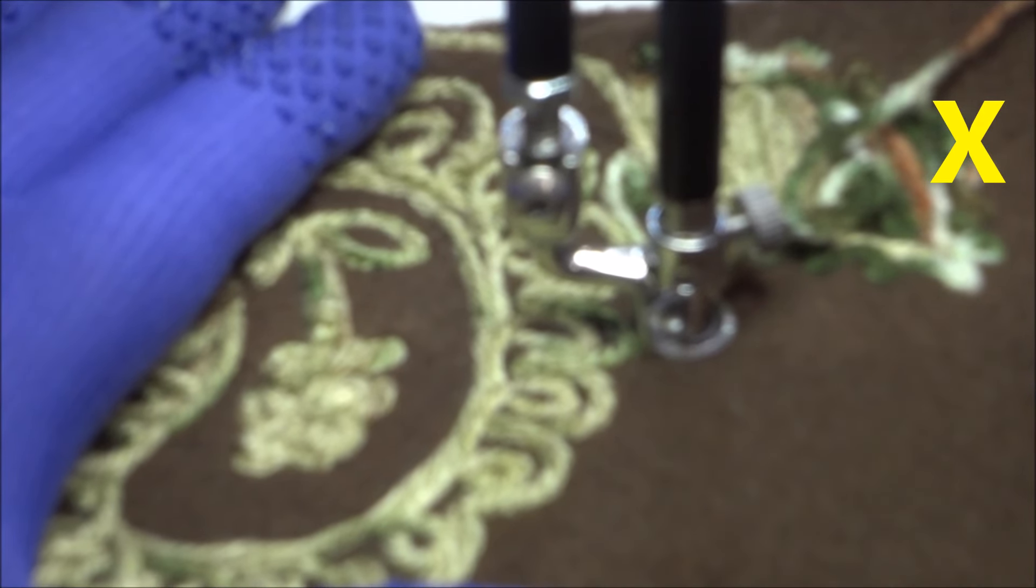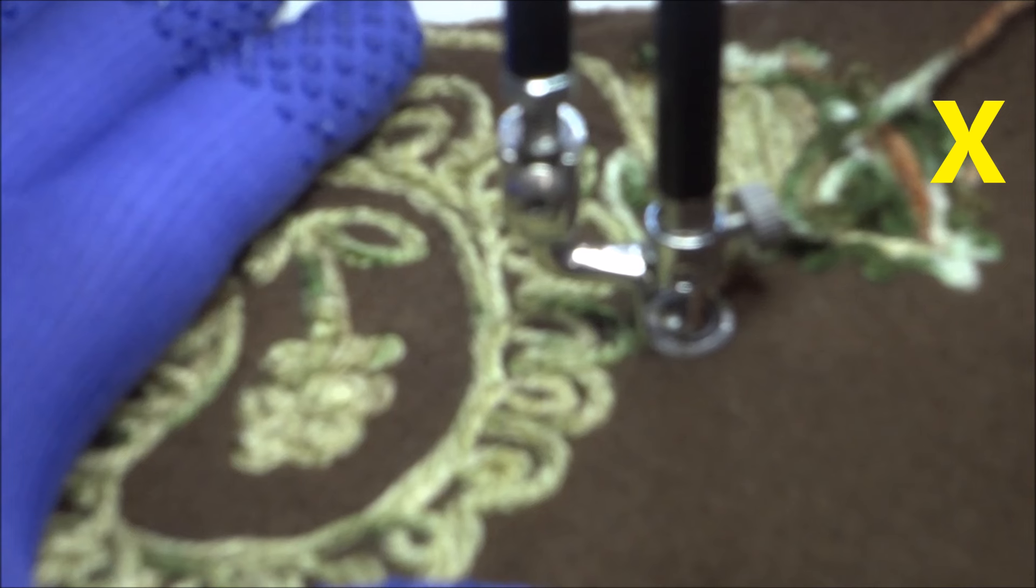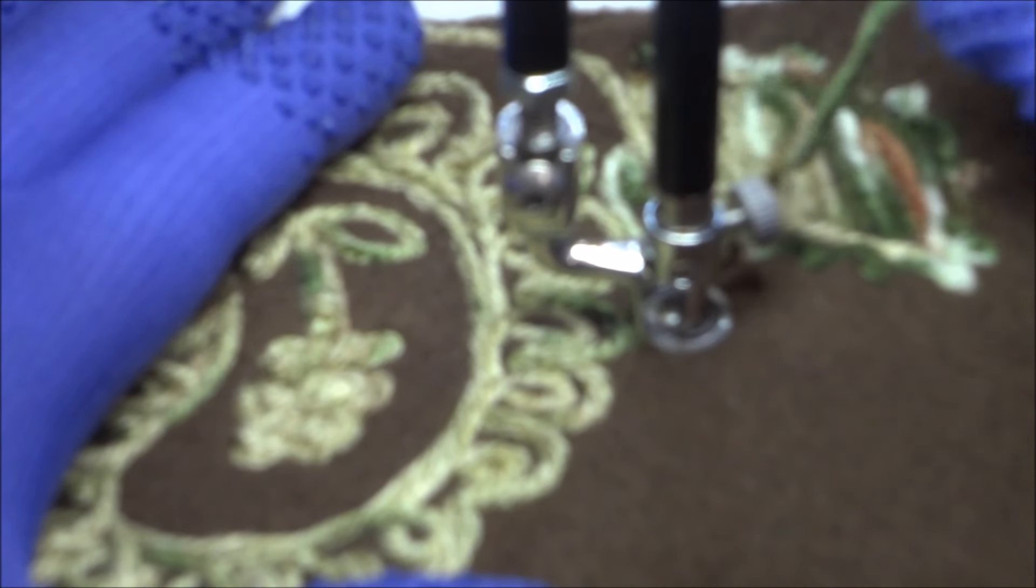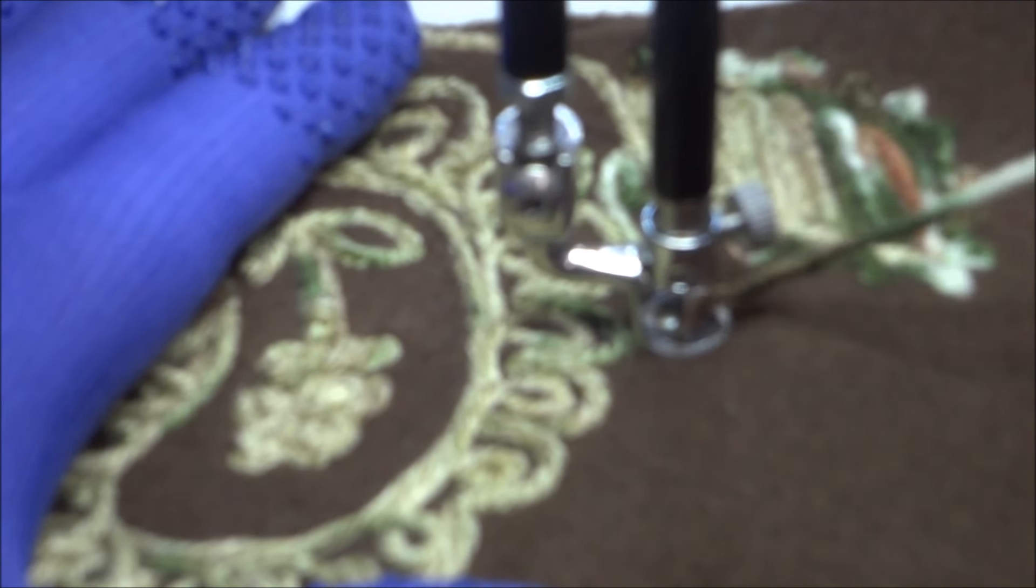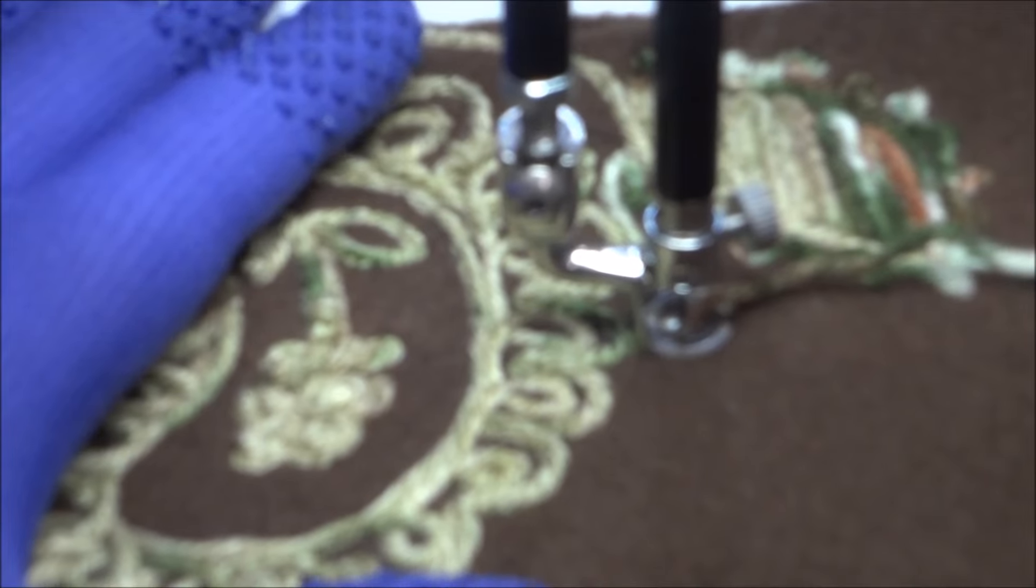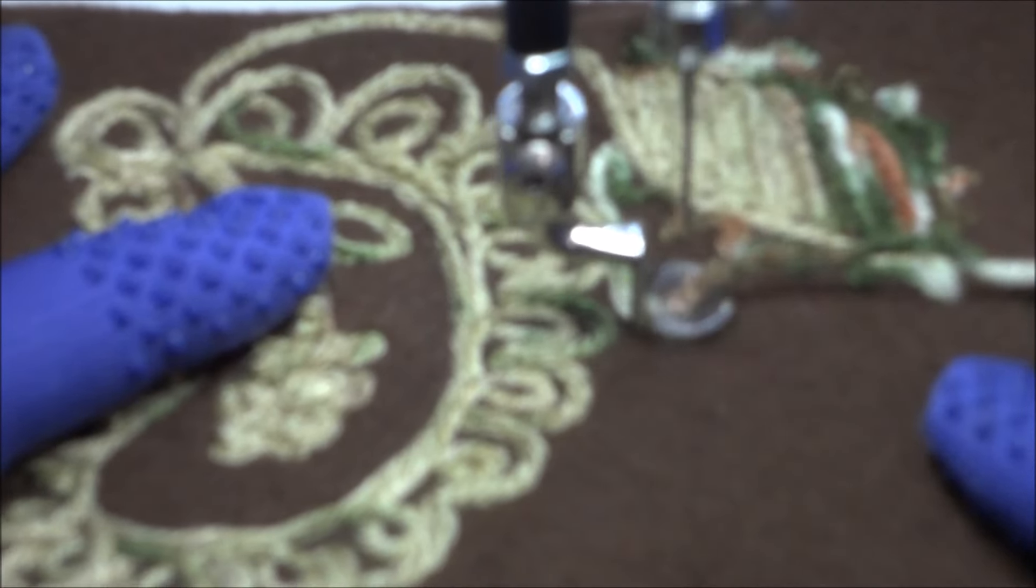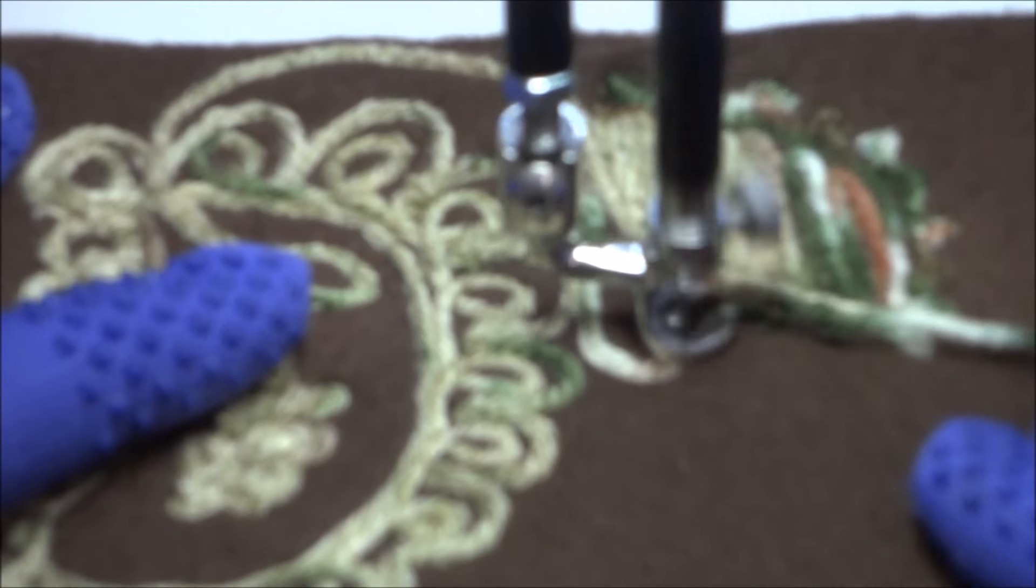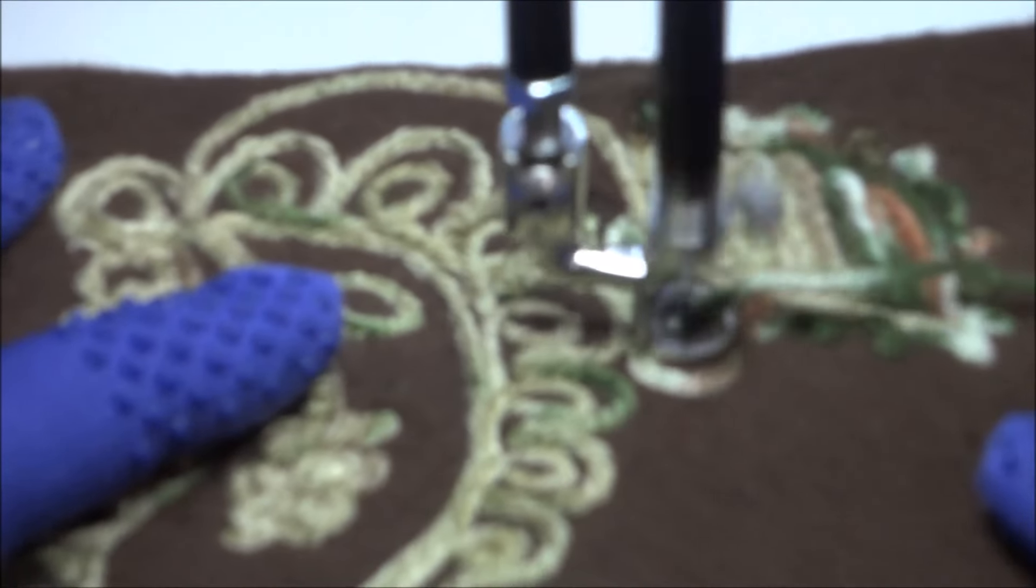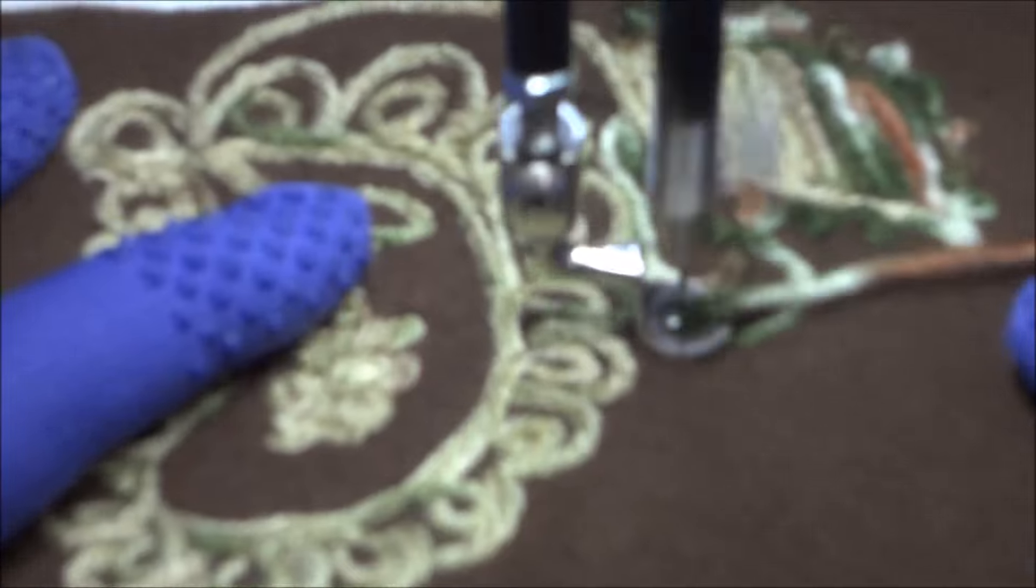Now if you see where the x is there's a little loop of yarn there. You want to be real cautious and make sure you straighten out those loops. Otherwise you're going to have three strands of yarn fighting to get down that little hole. And that's just not real pretty. So make sure your yarn is always straightened out.